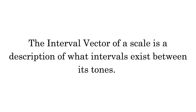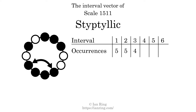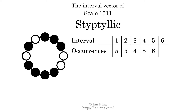The interval vector of a scale is a description of what intervals exist between its tones. There are 5 intervals of 1 semitone, 5 intervals of 2 semitones, 4 intervals of 3 semitones, 5 intervals of 4 semitones, 6 intervals of 5 semitones, and 3 intervals of 6 semitones.